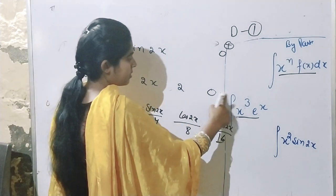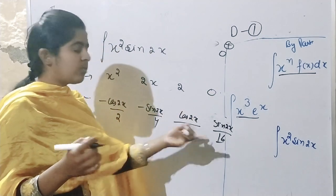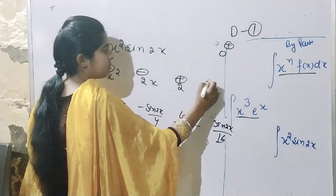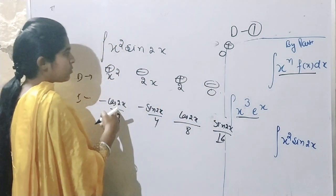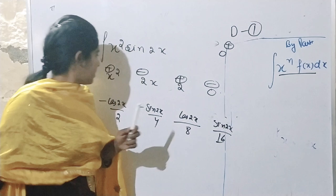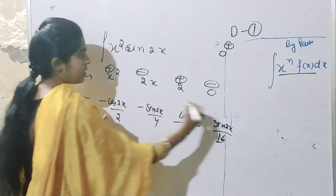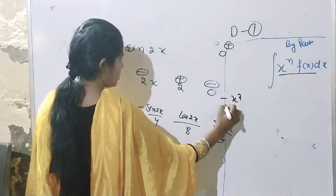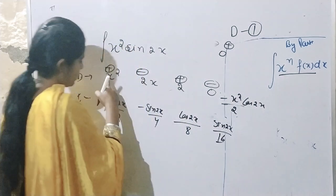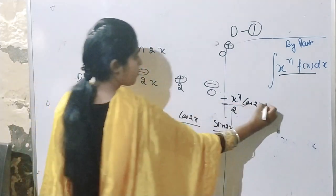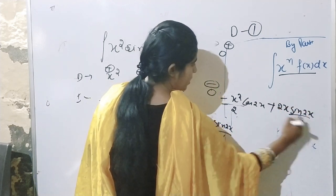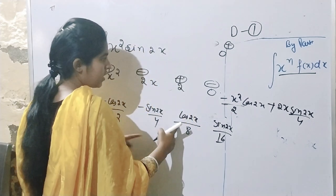You will go up to 0 but stop there — if you multiply beyond that point, you will be finished. The sign pattern will be positive, negative, positive, negative. You multiply this sign and you multiply this sign — giving minus x squared upon 2 cos 2x, then minus minus 2x, and you multiply sign 2x by 4.